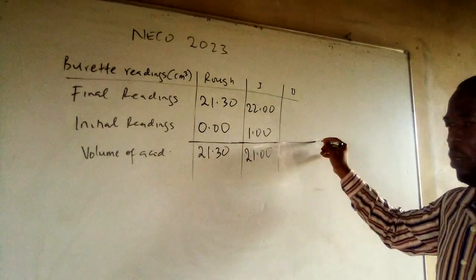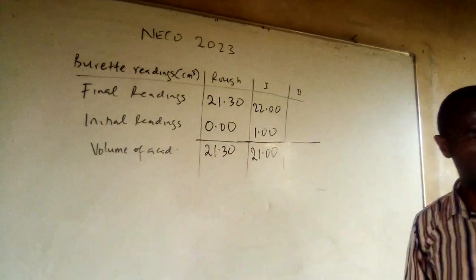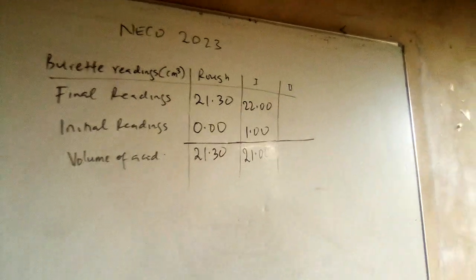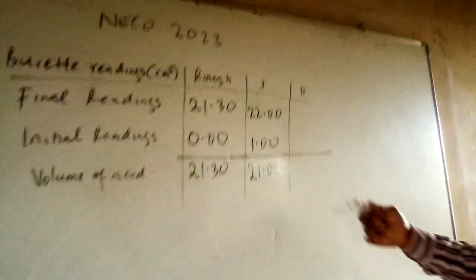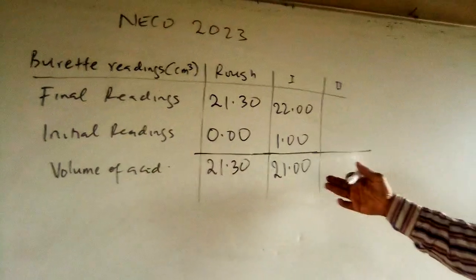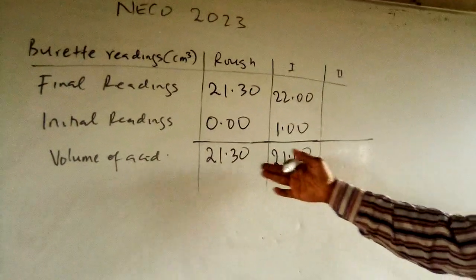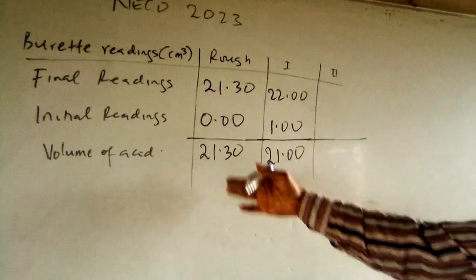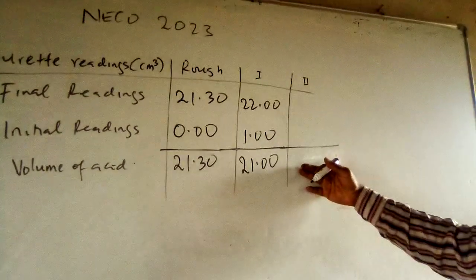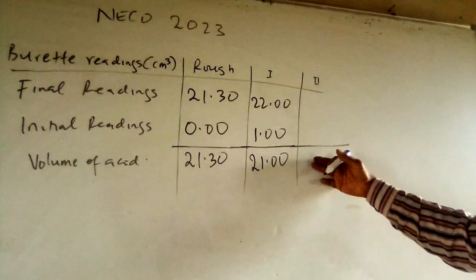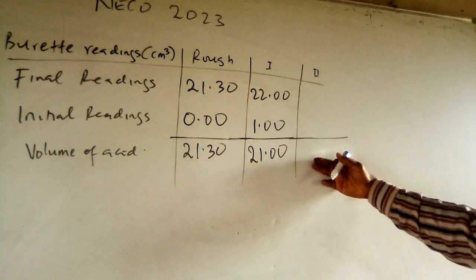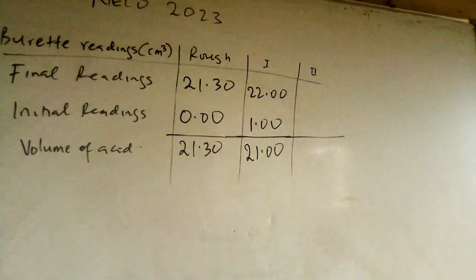Since 21.00 is more precise, we aim for approximately 21.00 cm³ in the next titration. The next initial reading will be set to approximately 2.00.